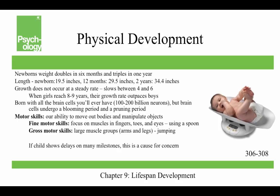Newborn weight doubles in the first six months and triples in a year, with a normal two-year-old weighing between 20 and 40 pounds. In terms of length, newborns are 19.5 inches; by one year they're 29.5 inches; by two years, 34.5 inches. Growth slows between ages four and six. Girls' growth outpaces boys around age eight or nine, so by age 10 the average girl weighs 88 pounds and the average boy 85. You're born with all the brain cells you'll ever have — 100 to 200 billion neurons — but your brain undergoes a blooming and pruning period where the pruning of neural connections actually allows the brain to function more efficiently.